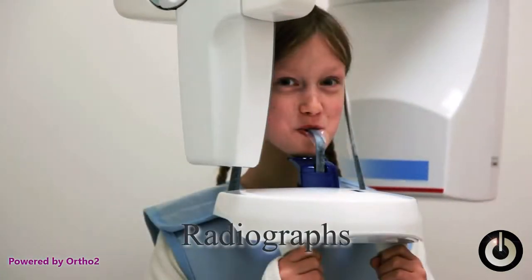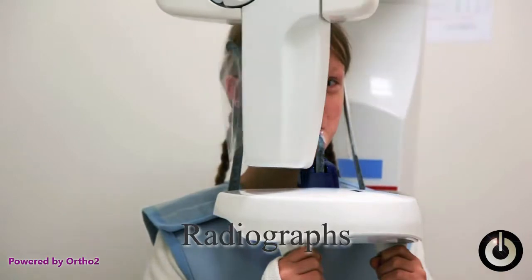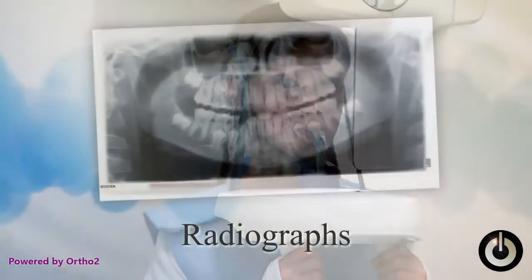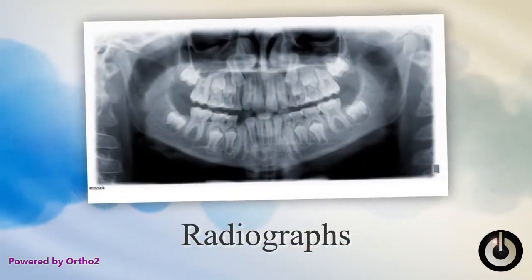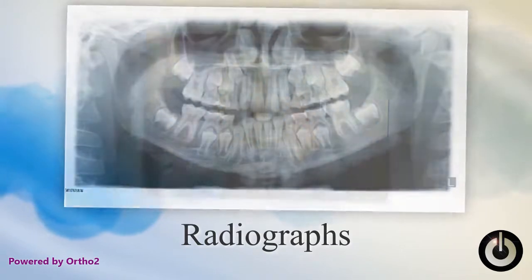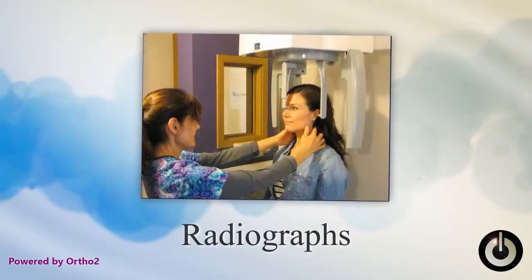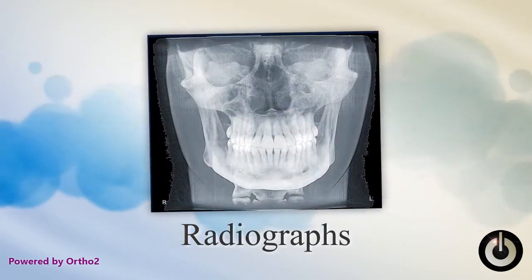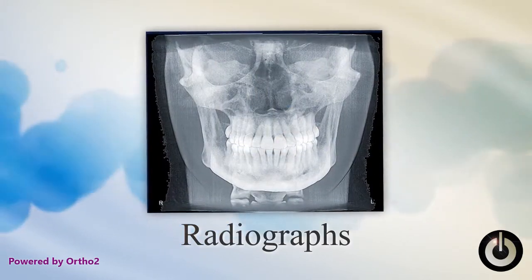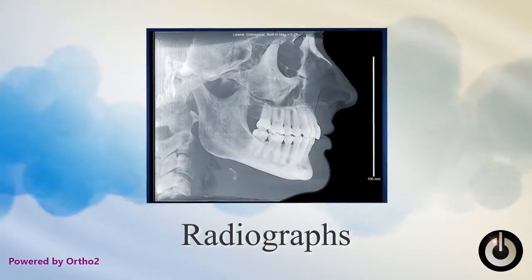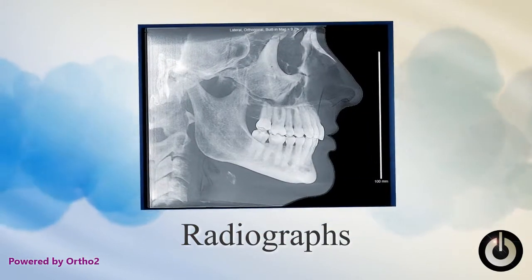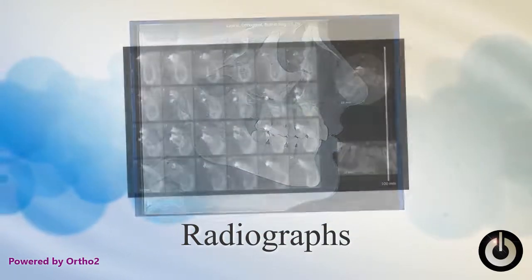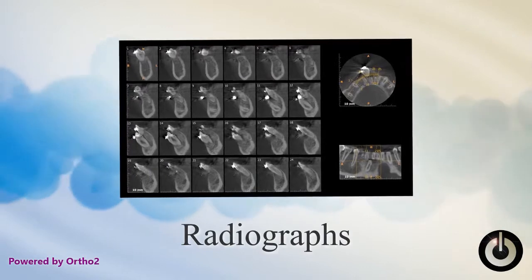Radiographs. A panoramic radiograph allows the doctor to see the condition of your roots, jaw joints, and problems with development such as ectopic or impacted teeth. A head radiograph, also called a cephalometric, allows the doctor to determine the position of the jaws and teeth. 3D or cone beam images may also be needed.